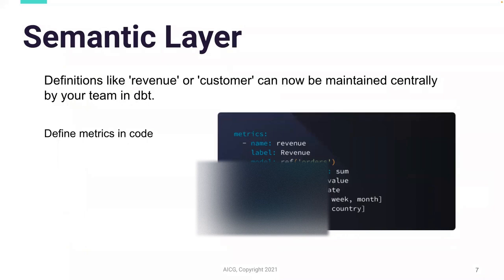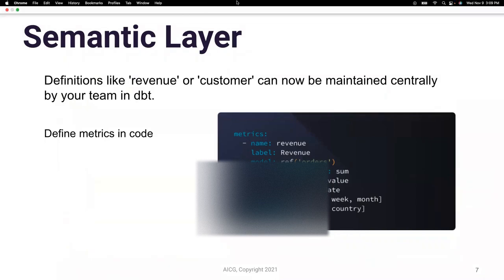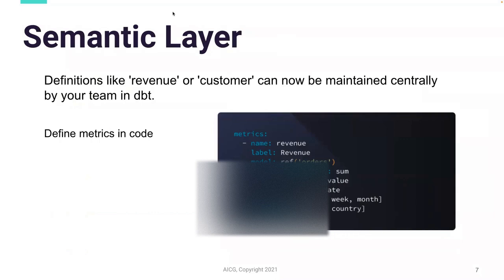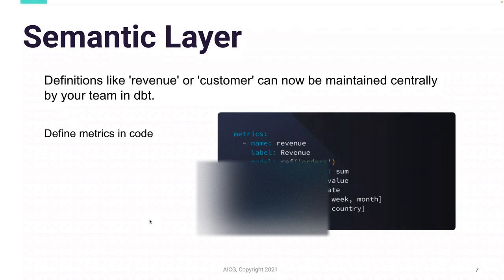One of the highlights of the week was really the announcement of the semantic layer. From DBT Labs' perspective, when you think of common definitions of metrics — really key metrics across an organization like revenue, or what defines a customer — you're able to define that within DBT itself, DBT Cloud. You define it once and use it many times. We think of organizations with multiple BI tools, data science tools, or other applications pulling data from your data cloud.